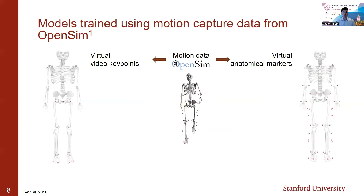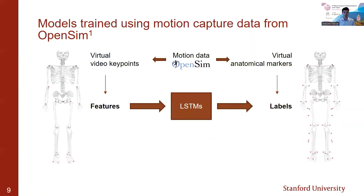To train the networks, we created a training set based on motion capture data processed with OpenSim. We extracted data from open source repositories where each motion file came with an OpenSim model. For each OpenSim model, we added virtual markers corresponding to the video keypoints on one hand and the anatomical markers on the other. We could then extract, for each motion file, the 3D trajectory of each virtual marker, and we used these trajectories as features and labels when training the networks.